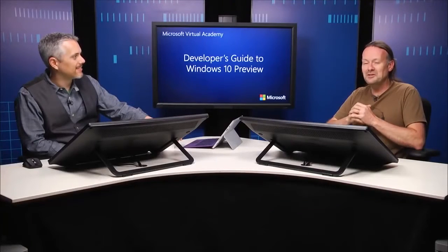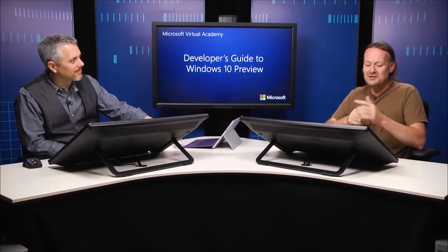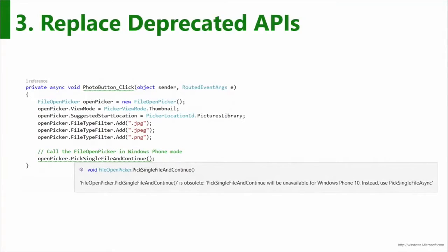The happy takeaway is they're gone. They managed to engineer this problem away, so even on our low-memory devices, pick-single-file-and-continue is gone. Instead, we've now got pick-single-file-async, which is exactly the same across all of it — it's the Windows desktop model. That's on the C# API side.